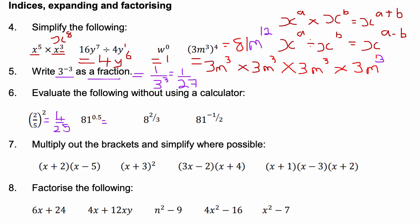81 to the power of 0.5: a power of a half in maths just means a square root. So it's the square root of 81, which is 9 — specifically the positive root of 81.